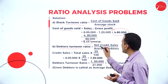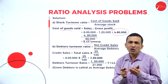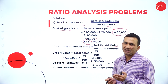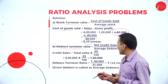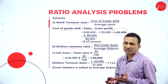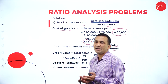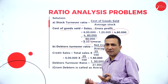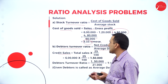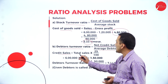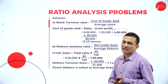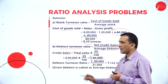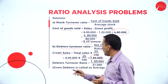Moving to debtor turnover ratio, which is net credit sales divided by average debtors. Average debtors relate to bills receivable. We know 25% of sales is treated as credit sales, so 75% is cash. Total sales is 6 lakh, so 25% gives credit sales of 1,50,000.